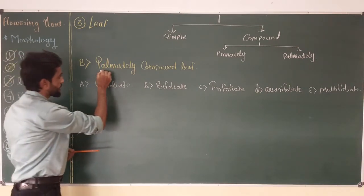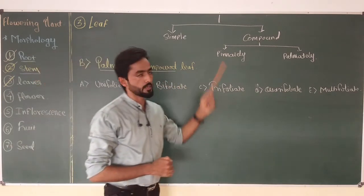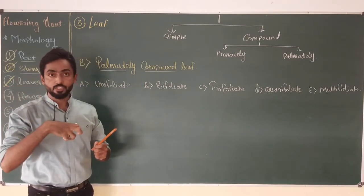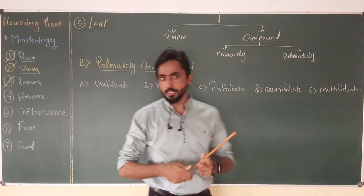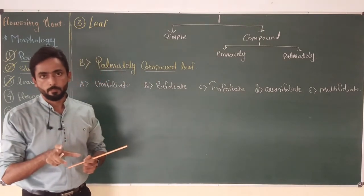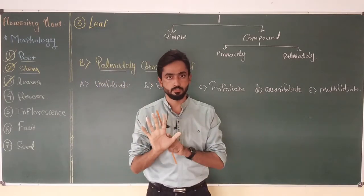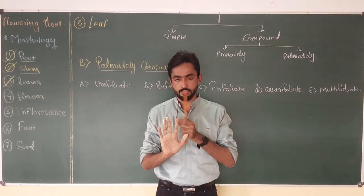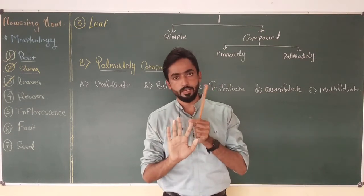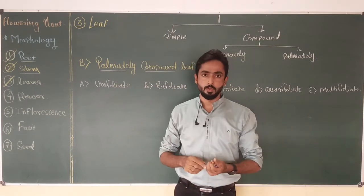Before discussing the types, we should understand what palmately compound leaf is. It is quite different from the pinnately compound leaf. In pinnately compound leaf, leaflets are directly attached to the rachis or mid-rib. But in palmately compound leaf, the leaf plates are attached to the tip of the petiole. The structure resembles a hand and fingers, with different fingers attached to a common point. Similarly, leaflets are attached at the common point of the petiole.